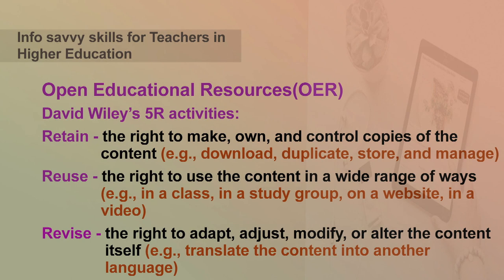The second R is Reuse — the right to use the content in a wide range of ways, for example in a class, in a study group, on a website, or as a video. The next R is Revise — the right to adapt, adjust, modify, or alter the content itself.